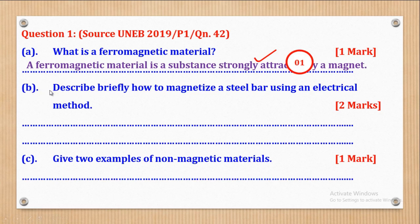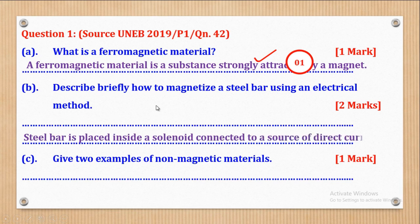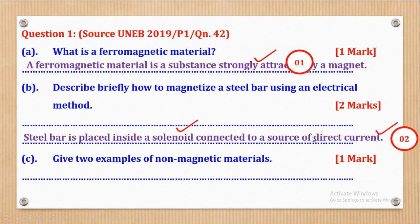Part B says: describe briefly how to magnetize a steel bar using an electrical method. The steel bar is placed inside a solenoid connected to a source of direct current. The word solenoid is one mark, and connecting it to a direct current is another mark — that's how the two marks could be got.